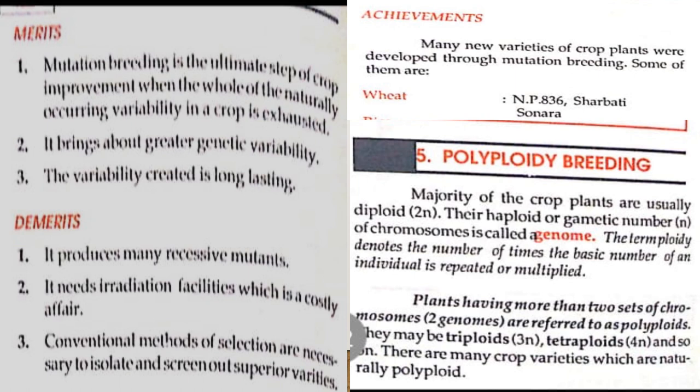Mutation breeding is the ultimate step of crop improvement when the whole of the naturally occurring variability in a crop is exhausted. It brings about greater genetic variability, and the variability created is long-lasting. Demerits: it produces many undesirable mutants; it needs irradiation facilities, which is a costly affair; and conventional methods of selection are necessary to isolate and screen out superior varieties. Achievements: many new varieties of crop plants were developed through mutation breeding — one example is the wheat variety called Sonalika (Sonar Sabarmati).